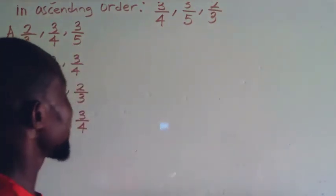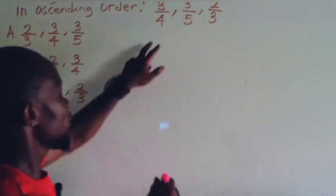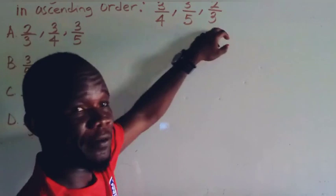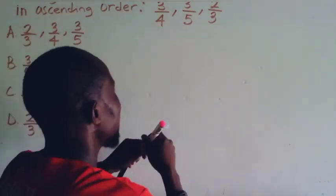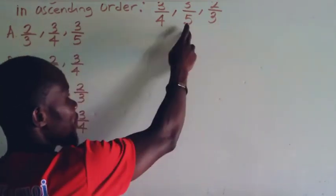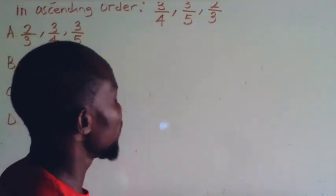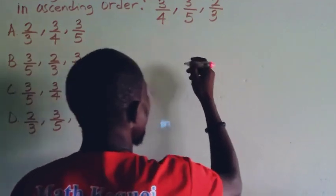The first thing we need to do is find the least common denominator for 4, 5, and 3. The least common denominator means the number that 4, 5, and 3 can all divide into evenly with a remainder of 0. That number is 60.